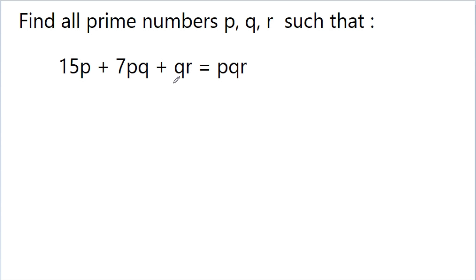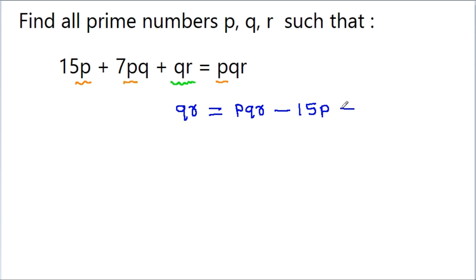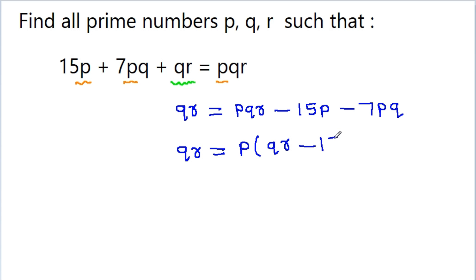If we see this equation, we have qr and in the other three terms we have p. So we can separate the terms containing p. We get qr = pqr - 15p - 7pq, and taking p common, we get qr = p(qr - 15 - 7q). Now p, q, and r are prime numbers.